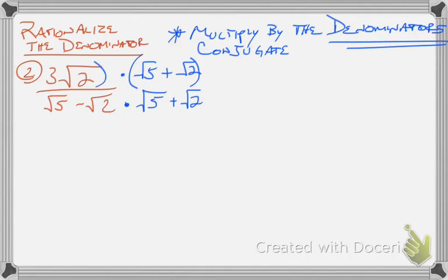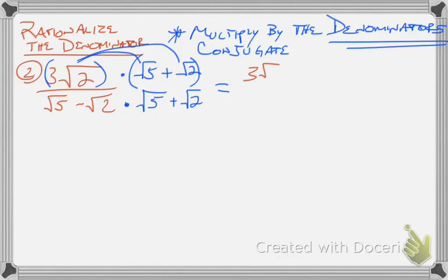Understand that this 3 square root of 2 is one term, so all I'm doing is distributing that one term into this binomial. That's going to be 3 square root of 5 times 2, which is 10, plus 3 times the square root of 2 times 2, which is 4.